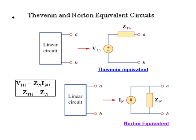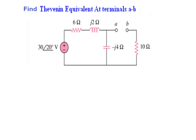Let's solve an example now. In this circuit we have to find the Thevenin equivalent at terminal AB. We have to find the equivalent voltage at this point, which would be called V_thevenin, and also the equivalent impedance across this terminal by shorting the voltage source, which will be Z_thevenin. Let's start.